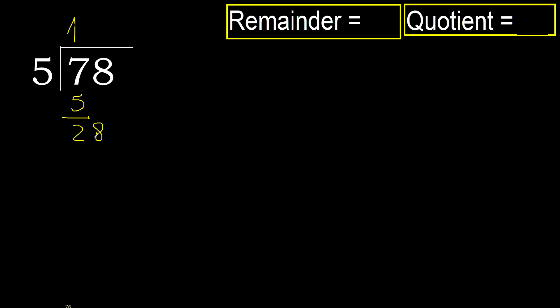Next: 28. 5 multiplied by 6 is 30 — it is greater. 5 multiplied by 5 is 25 — it is not greater. Subtract: 3.